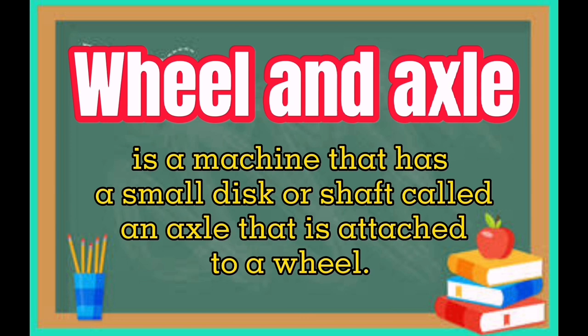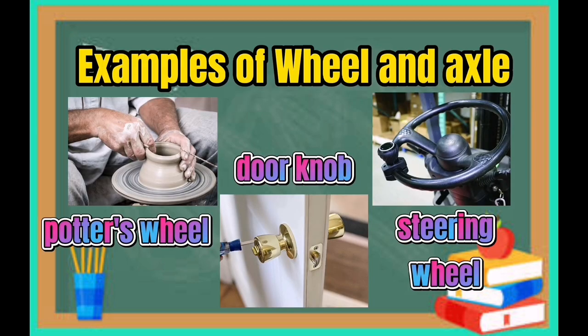Wheel and axle. It is a machine that has a small disc called an axle that is attached to a wheel. A water wheel, doorknob, and the steering wheel are examples of a wheel and axle.